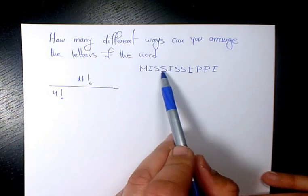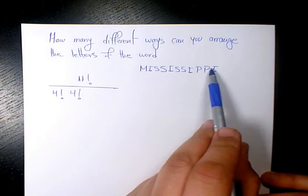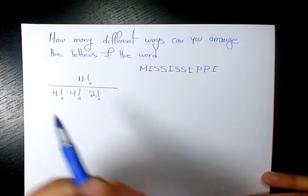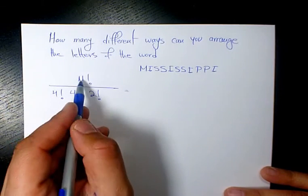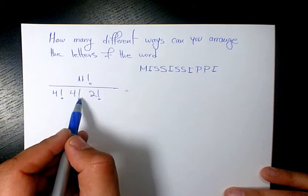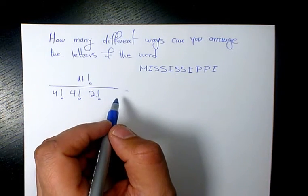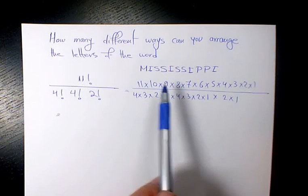So it's going to be eleven factorial divided by four factorial, four factorial, two factorial. When you expand it, it's going to be like that: eleven factorial is going to be eleven times ten all the way to one.